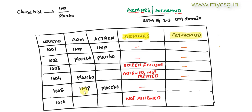For subject 1005, planned ARM was IMP but actual ARM is placebo — both are populated and different. So ACTARMUD must be populated. If the database documents that this happened due to a dosing or dispensing error, we would fetch that information and populate ACTARMUD accordingly, for example as 'Dosing Error'. For subject 1006, both ARM and actual ARM are null, so ACTARMUD is left null.